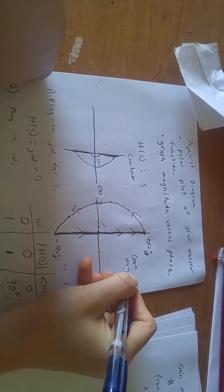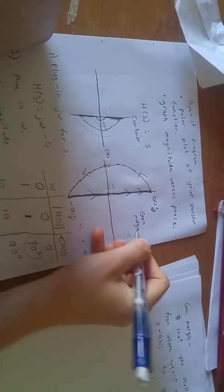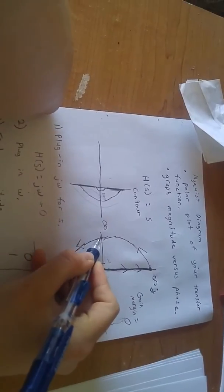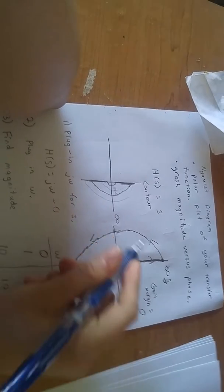Gain margin. Or, a more accurate answer would be that the gain margin cannot be found because there's a magnitude of infinity where the Nyquist diagram crosses the x-axis. So, that's the gain margin.